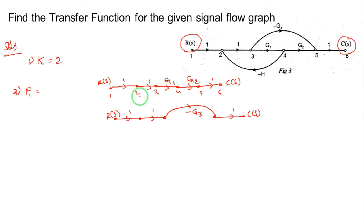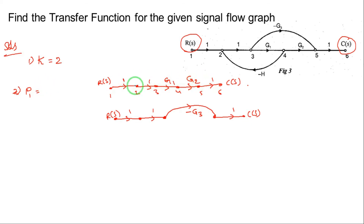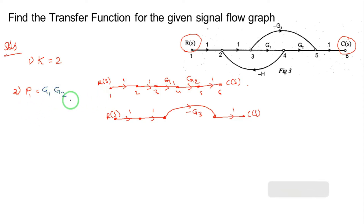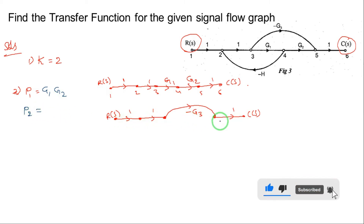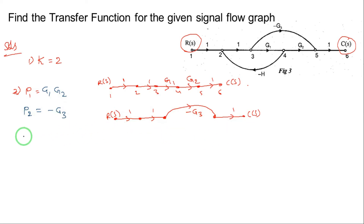Step two is to find the gains of the two forward paths. For the overall gain of forward path 1, we multiply the gains along the path: 1 into 1 into g1 into g2, which gives P1 = g1 × g2. For the overall gain of forward path 2, P2 = 1 × 1 × (−g3) × 1, so P2 = −g3. That is the multiplication of all forward gains.